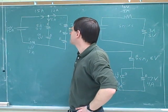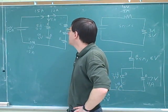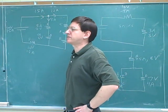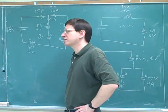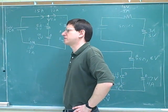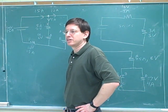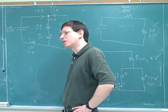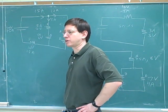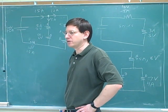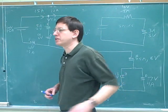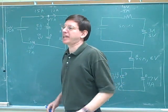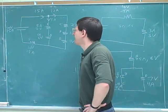Another Kirchhoff's law is about current. It says that the total amount of current coming into a node — the sum of the current coming into a node — equals the sum of the current going out of a node. The sum of the current going into a point equals the sum of the current going out of a point.